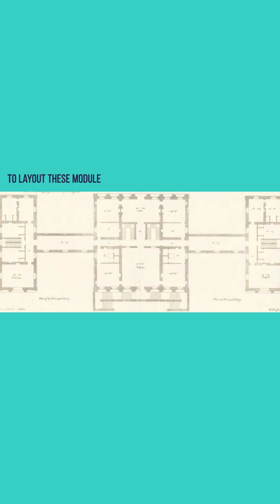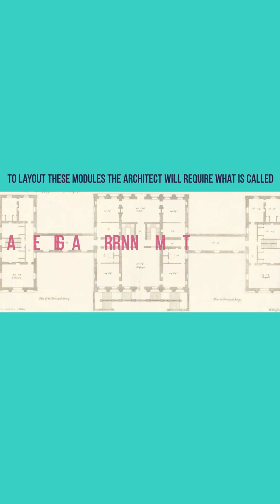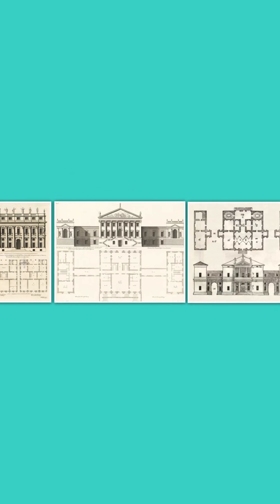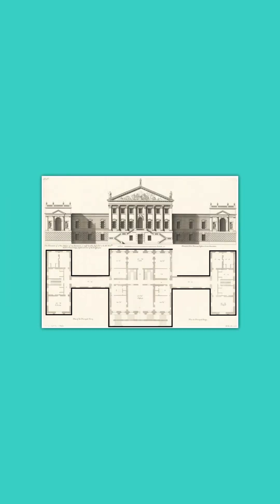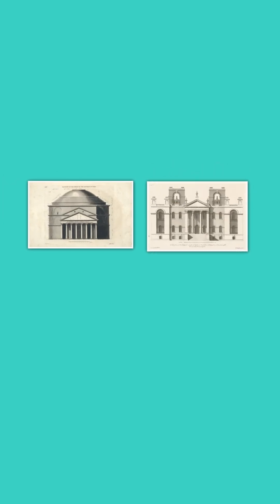To lay out these modules, the architect will require what is called arrangement, or the process of laying out the ground plane, which is the outlines for the surfaces of the building, the elevation to draw pictures of the building facades in detail, and perspective for sketching the front of the building while projecting the sides into the background.